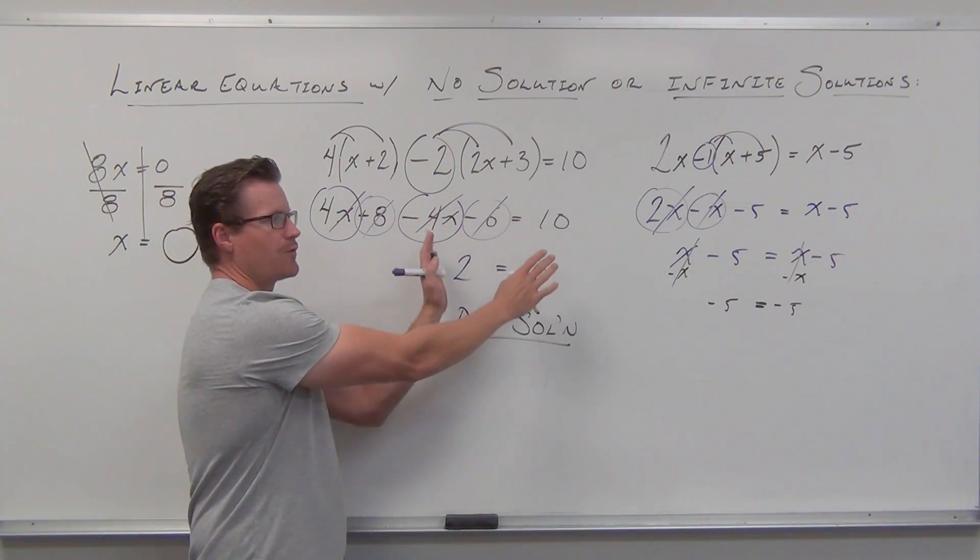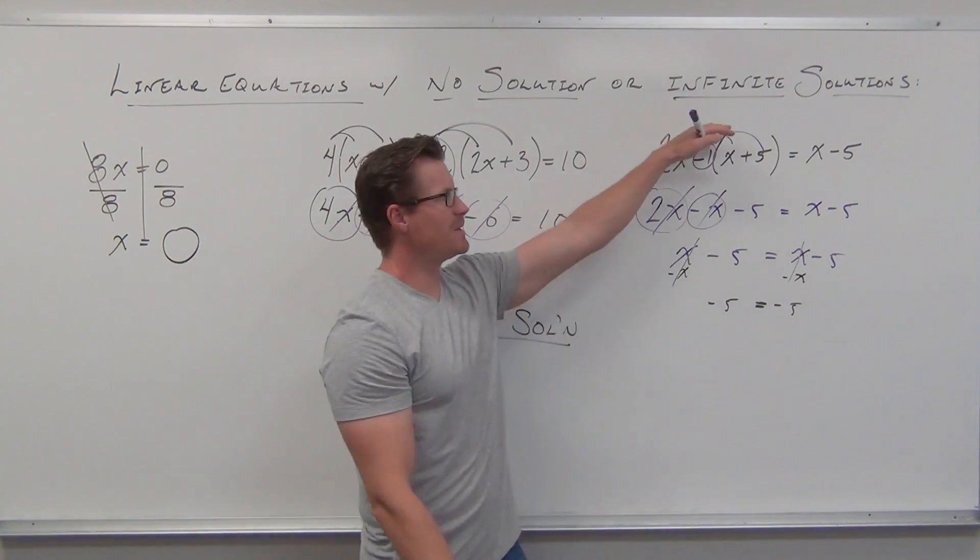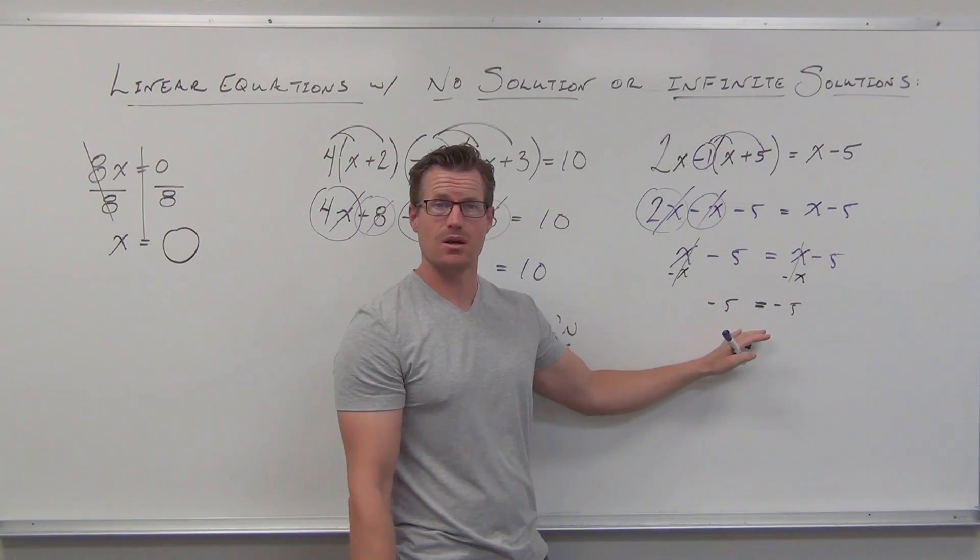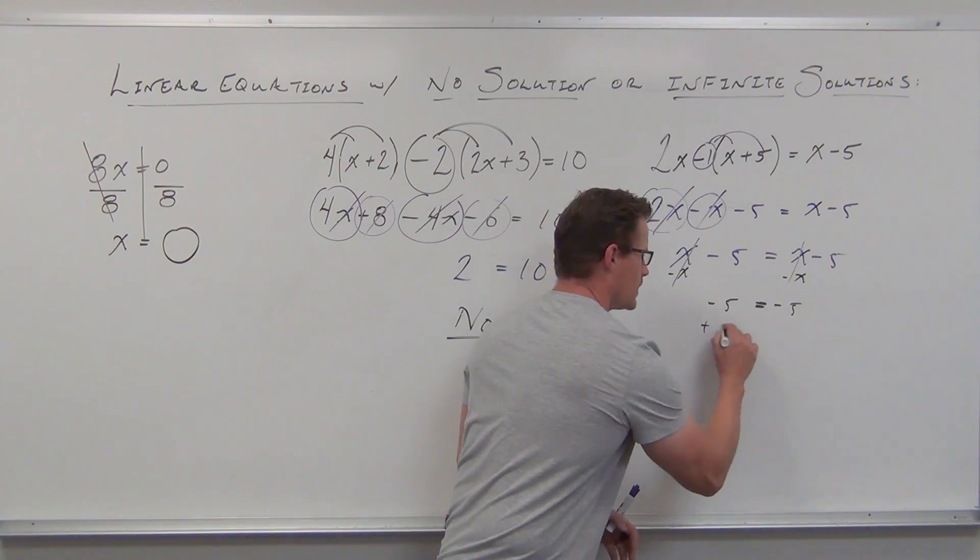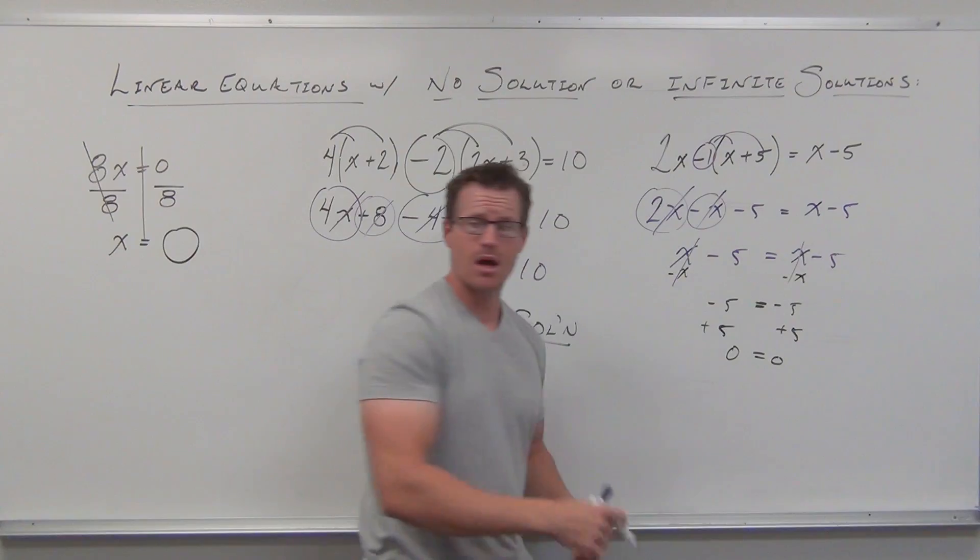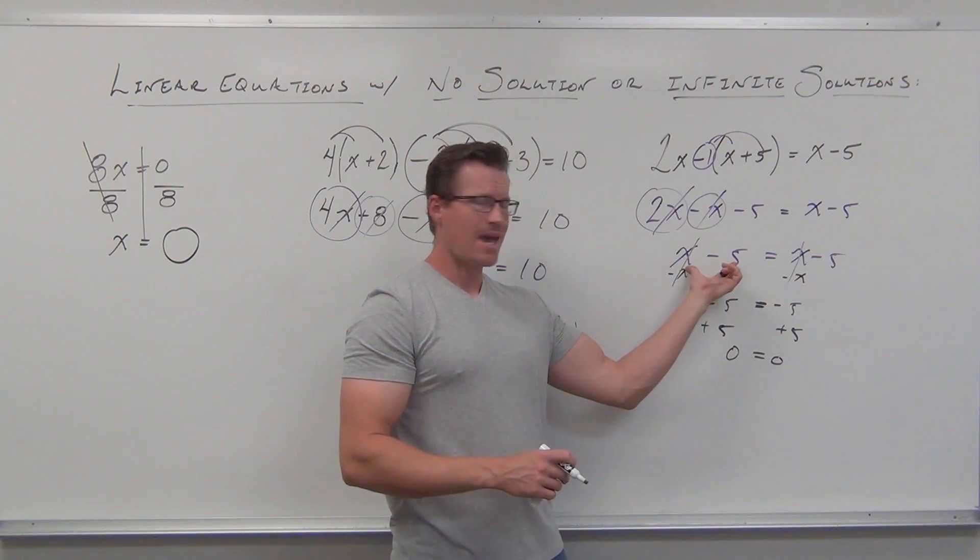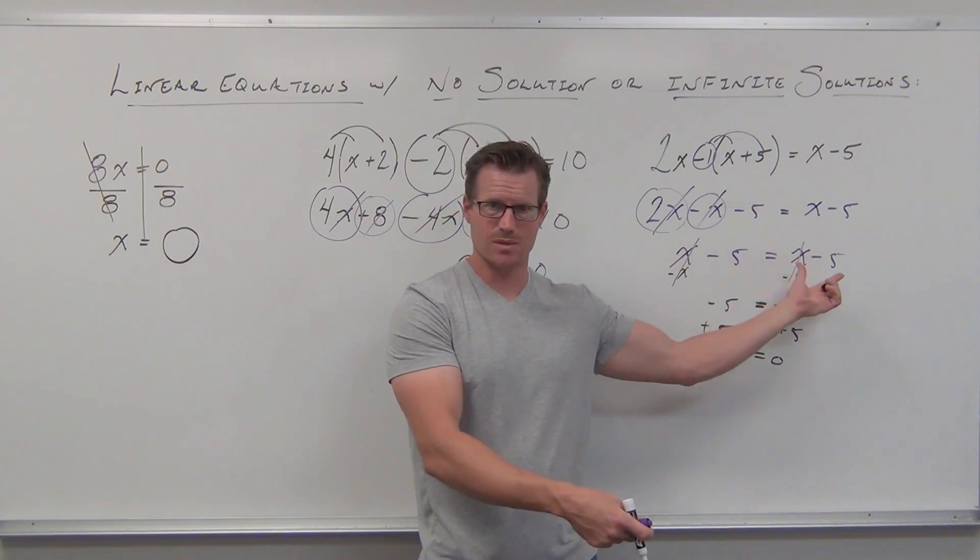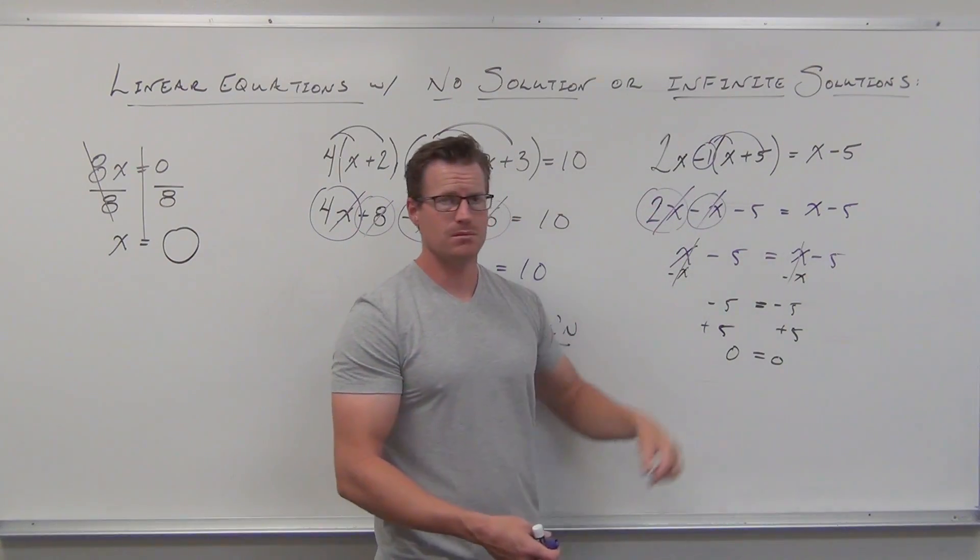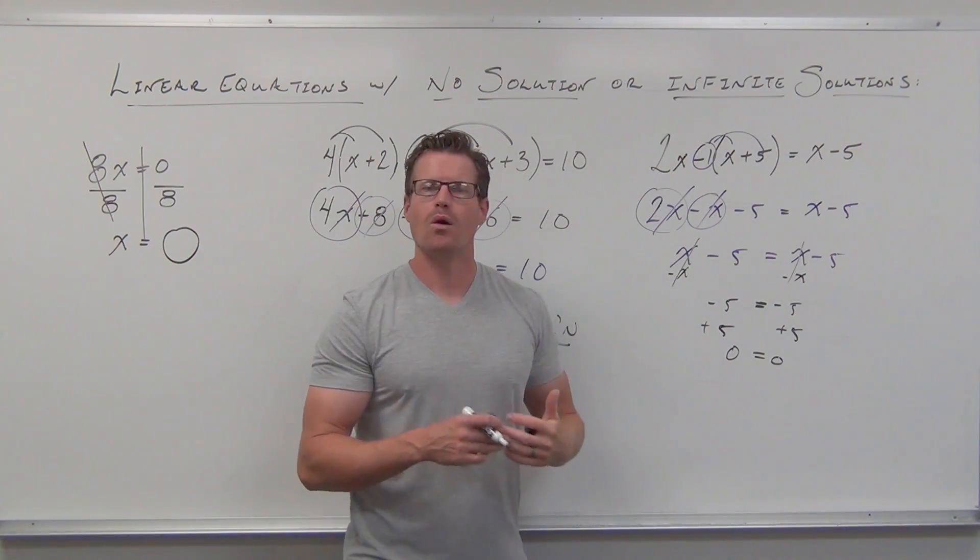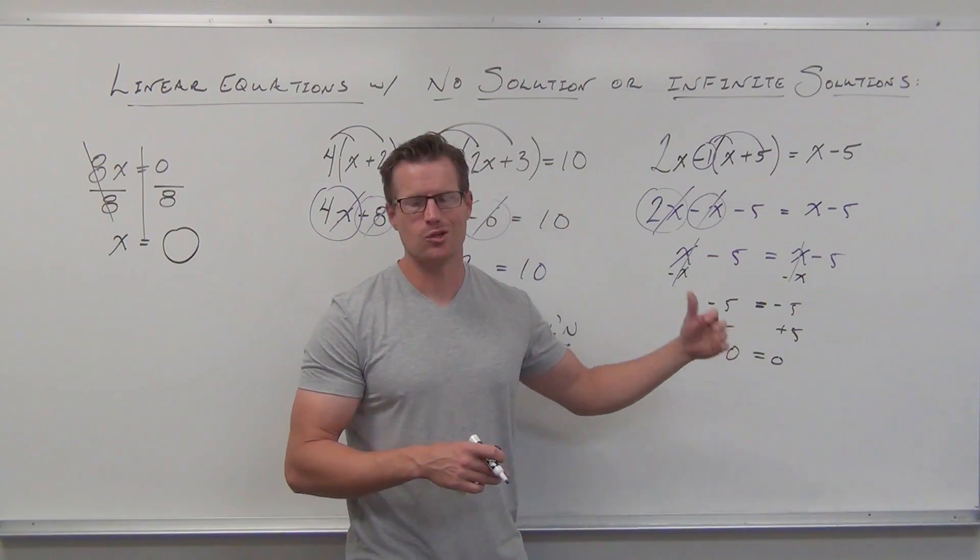When we get down with no variable and our sides are not equal, they're never equal, that's no solution. When we eliminate our variable and we just have sides that are always equal, negative five is always equal to negative five. Even if you've added five to both sides, you get zero equal to zero. Zero is always equal to zero. No matter what you do here, the two sides are always equal. In fact, you can stop right here. X minus five is always equal to x minus five, no matter what you plug in. Take 50, take a million, take negative 37. It's always going to be equal. This is the case where you have infinite solutions because no matter what you plug in, you're going to make a true statement.